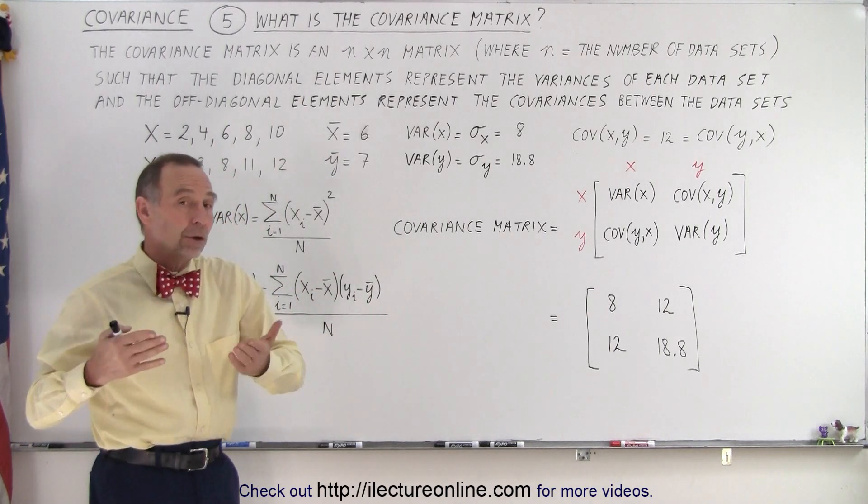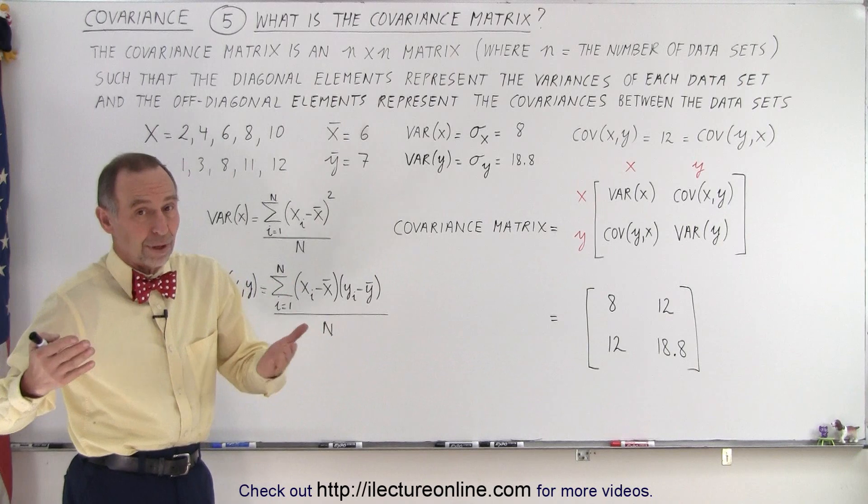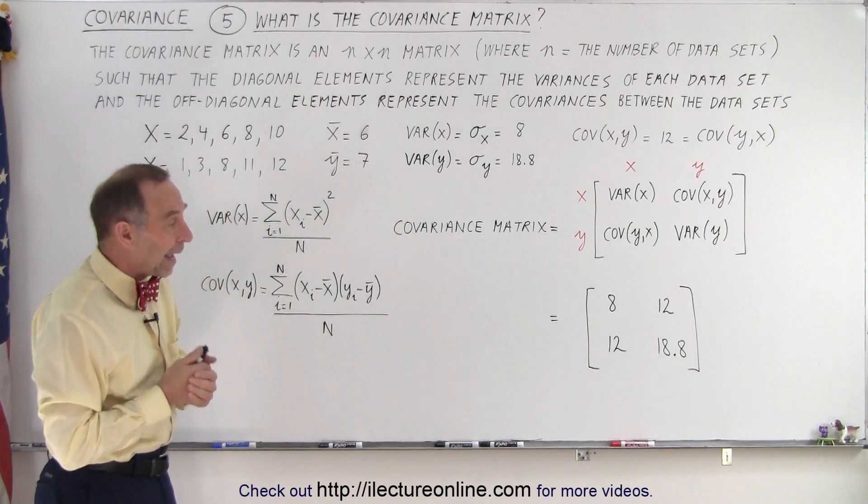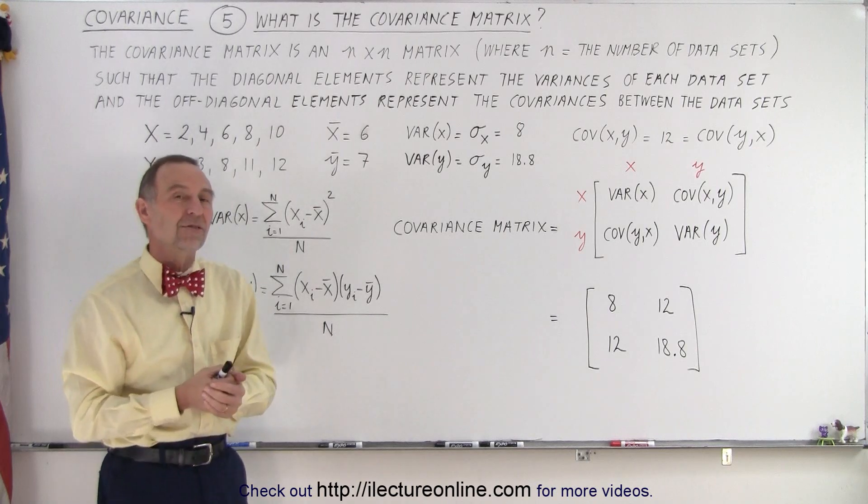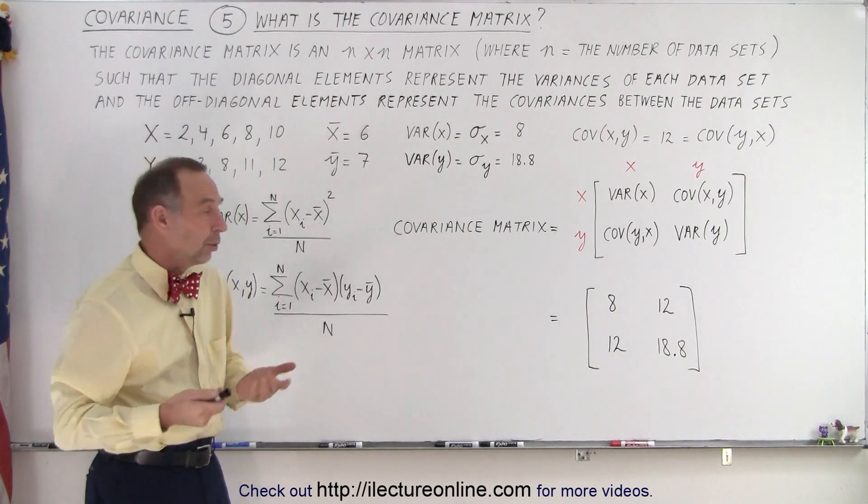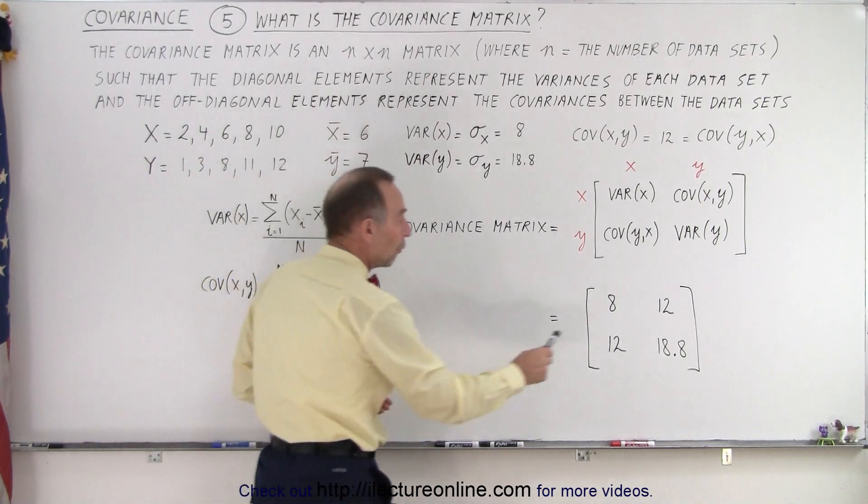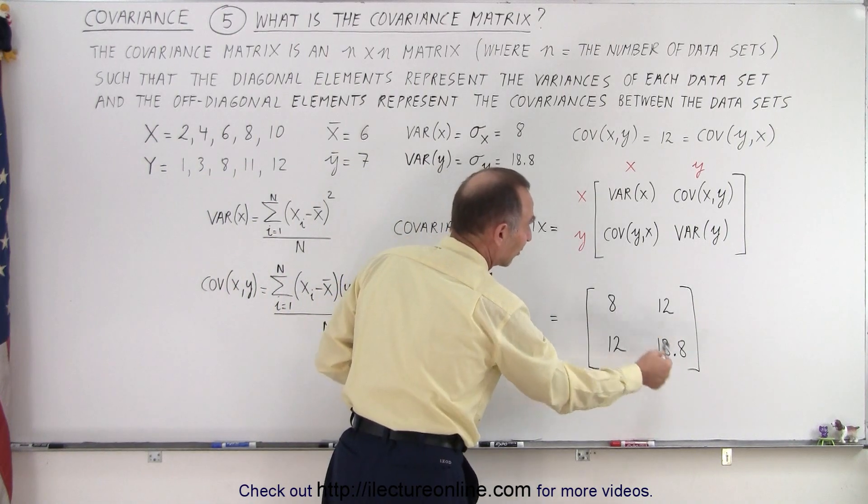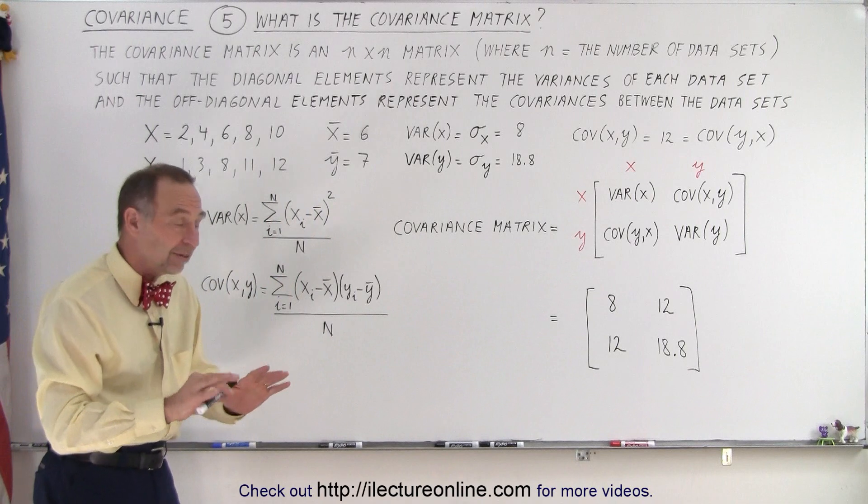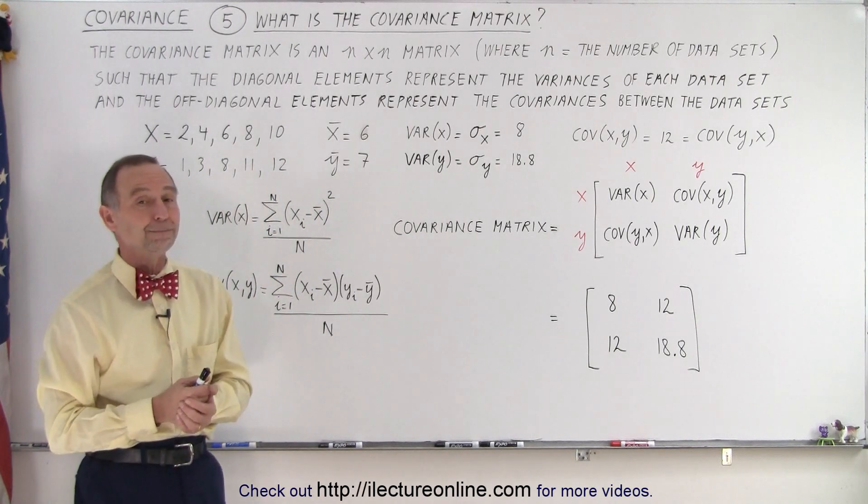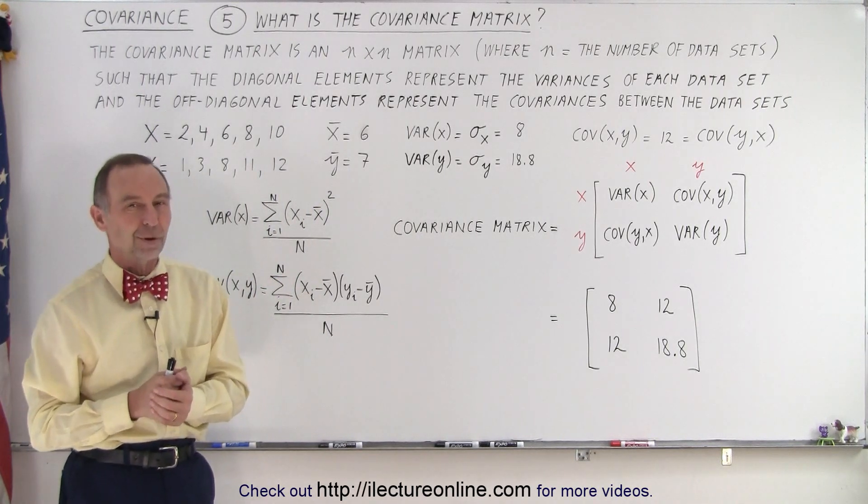We'll show you what they look like for a three by three when there's three data sets, and we'll get a feel for what the numbers actually represent. Notice that the covariance is roughly the same size as the variances - that has some significance. We'll see examples that help us understand that as well. Stay tuned.